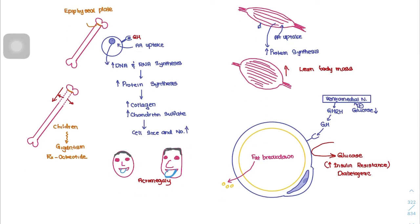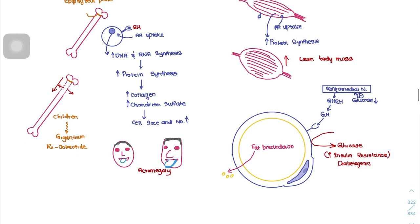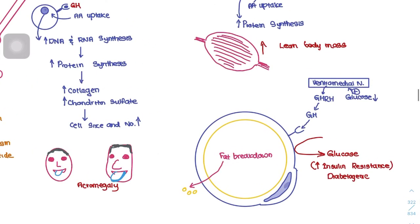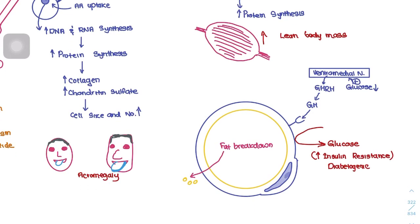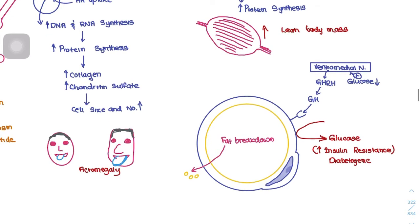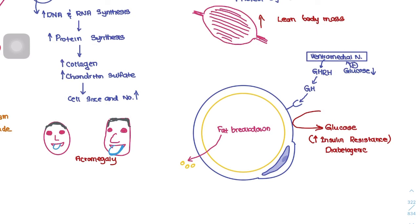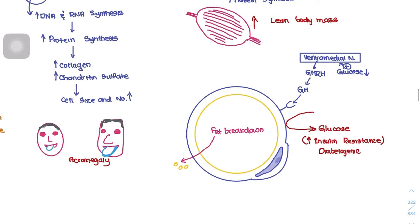When glucose levels decrease, it is detected by the ventromedial nucleus of the hypothalamus, which causes release of growth hormone releasing hormone and eventually growth hormone release. Growth hormone then causes adipocytes to increase fat breakdown and decrease glucose uptake, preventing glucose from entering cells. This causes blood glucose levels to rise — an effect also called increased insulin resistance.